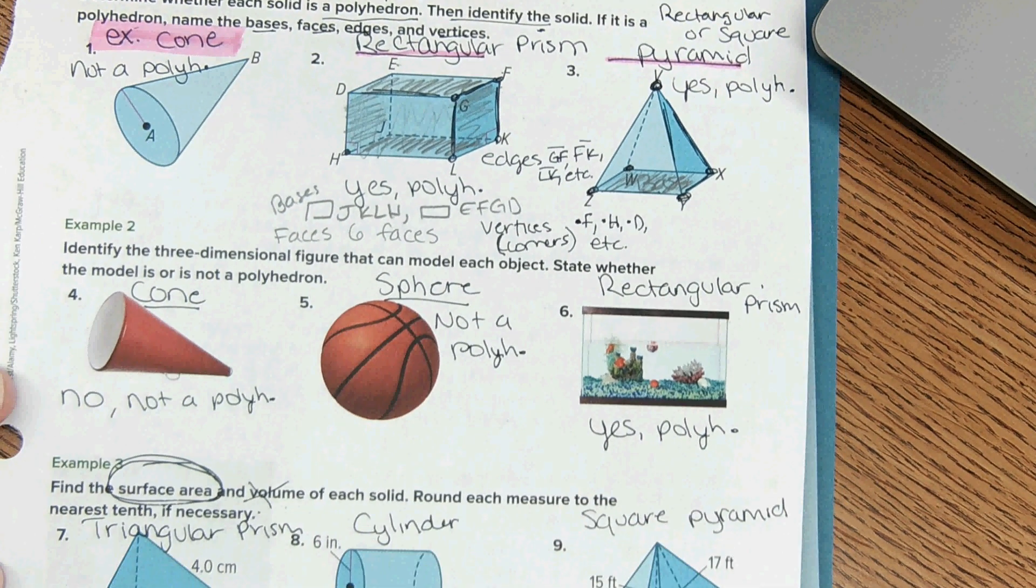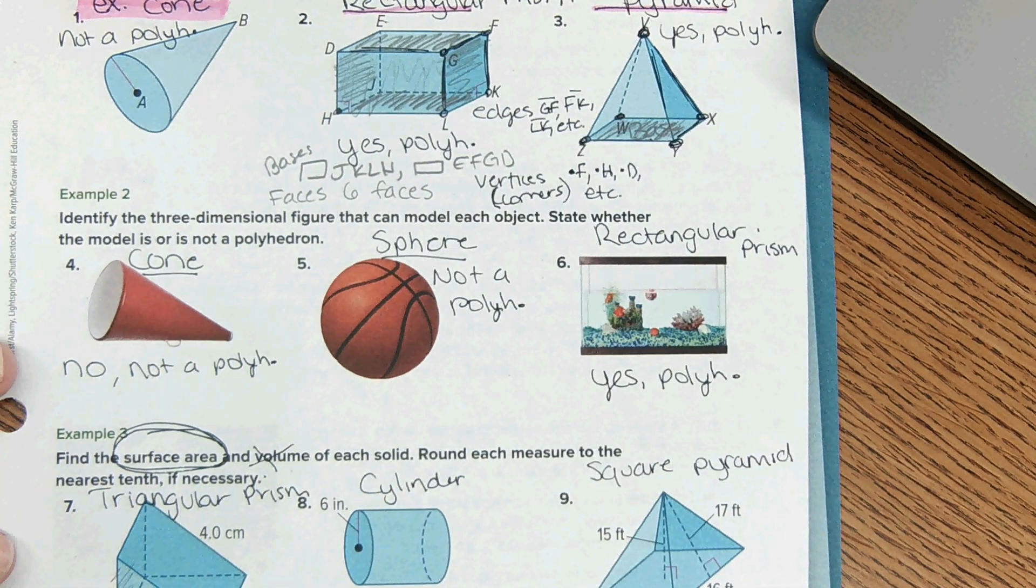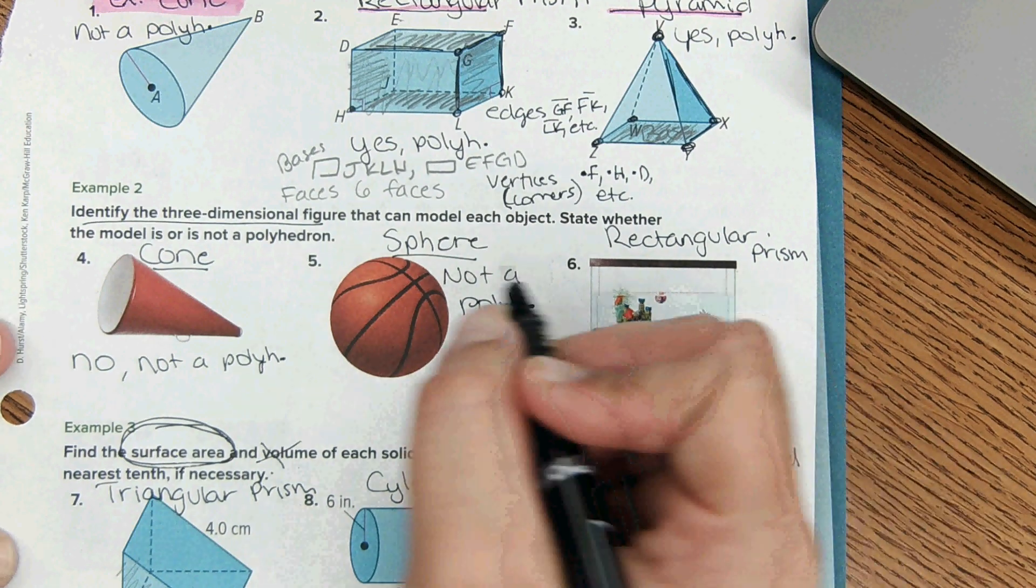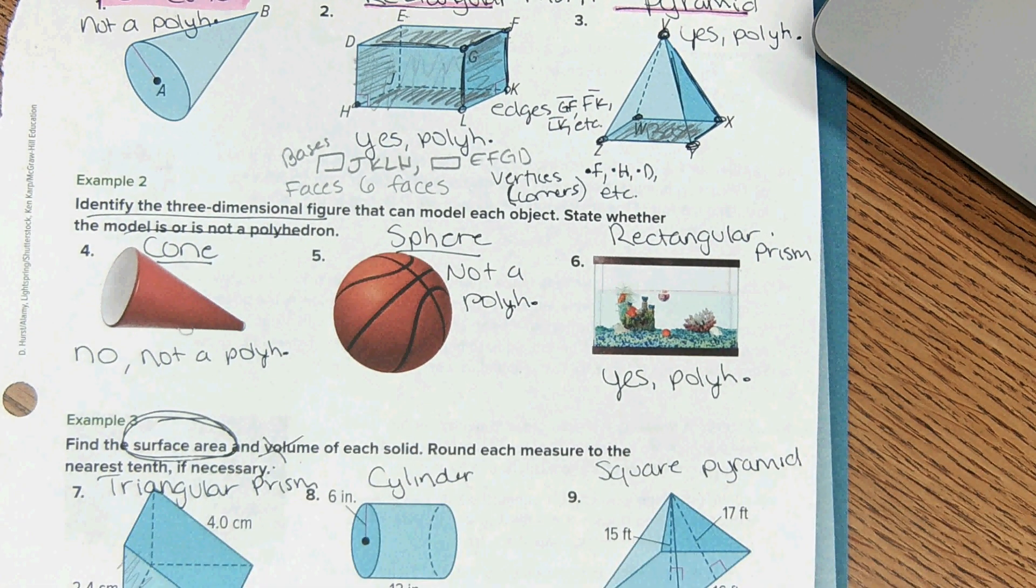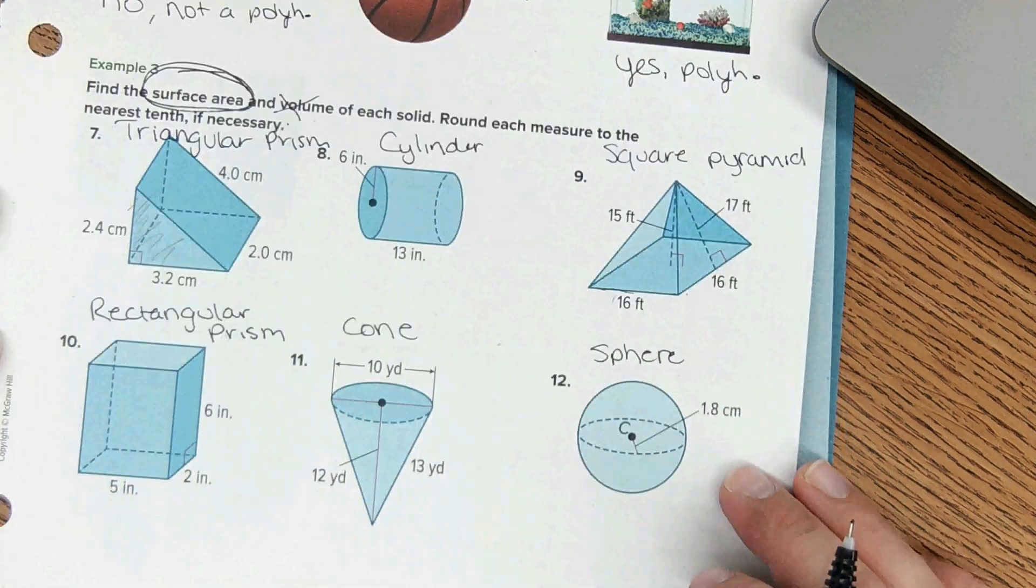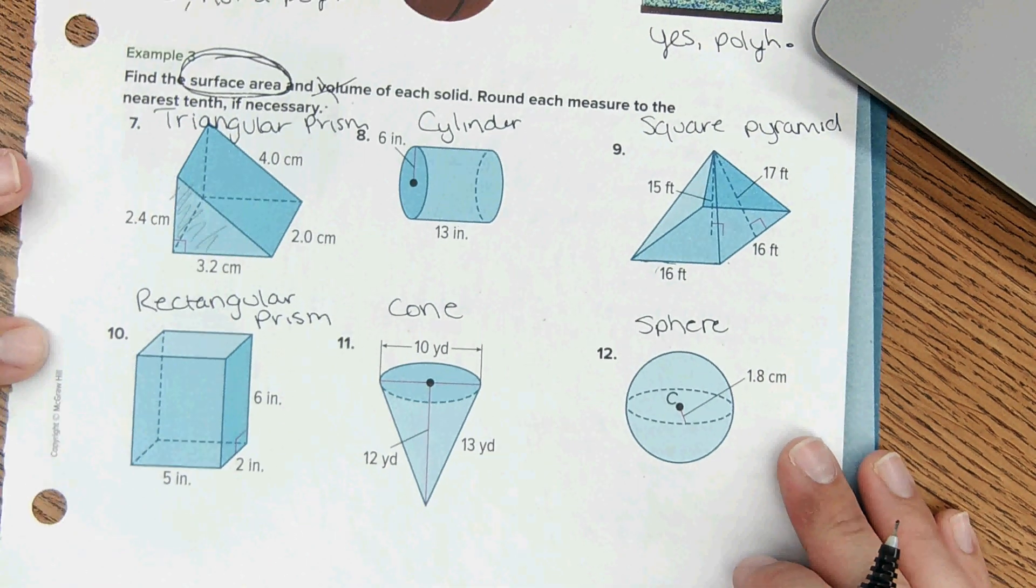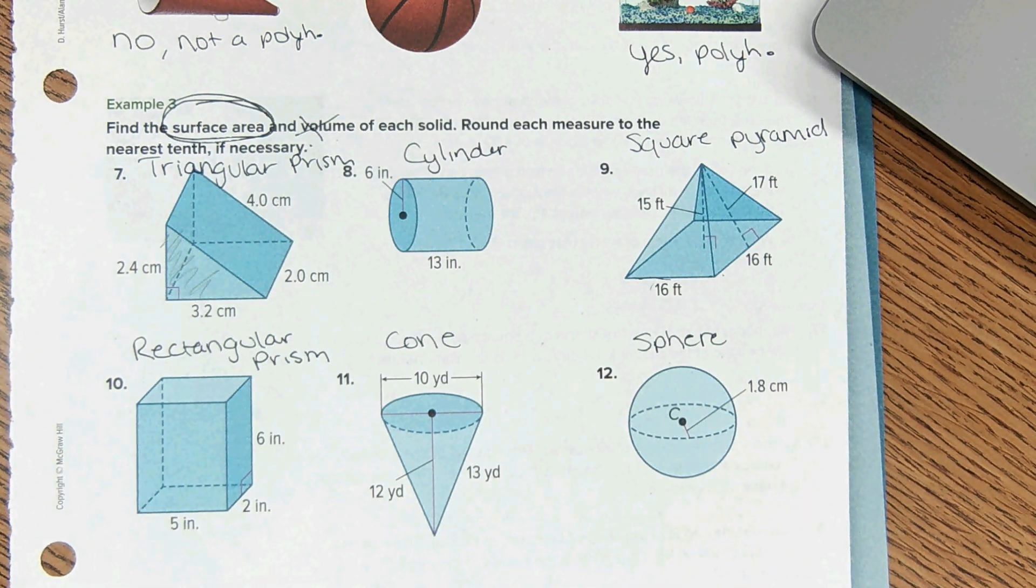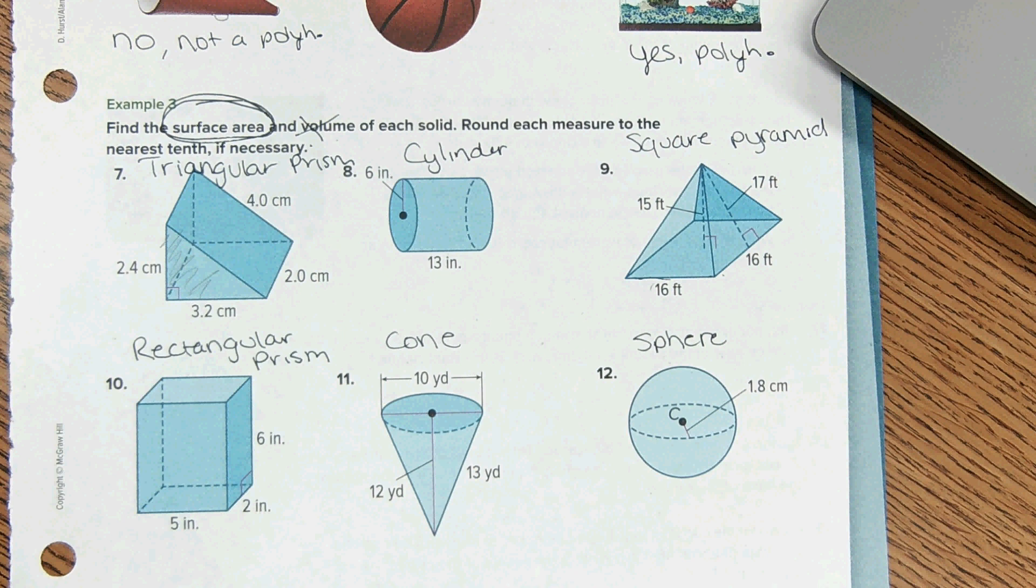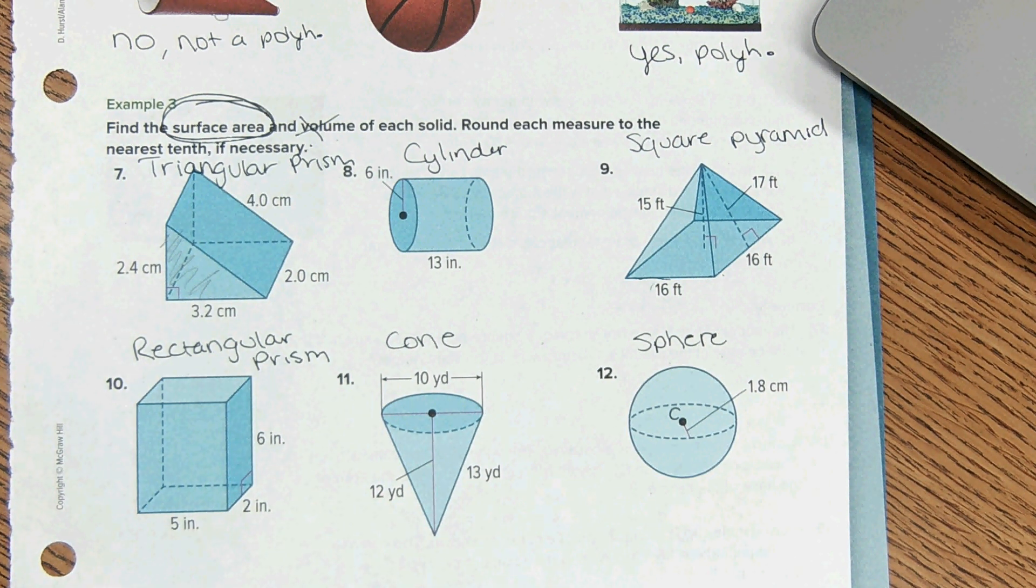Okay, continuing. For five and six all I asked was to identify the three-dimensional figure and state whether it is a polyhedron or not, which we already did, so we're good there. And now we're getting down to surface area. We're only focusing on surface area today.